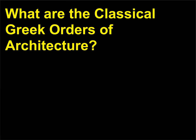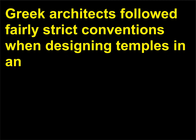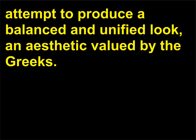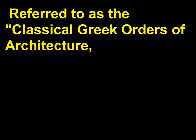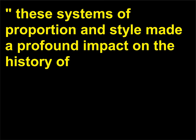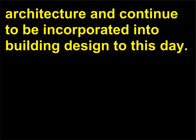What are the classical Greek orders of architecture? Greek architects followed fairly strict conventions when designing temples in an attempt to produce a balanced and unified look, an aesthetic valued by the Greeks. The three main orders, or patterns of temple-building design, are Doric, Ionic, and Corinthian — referred to as the classical Greek orders of architecture. These systems of proportion and style made a profound impact on the history of architecture and continue to be incorporated into building design to this day.